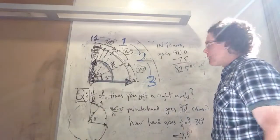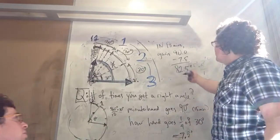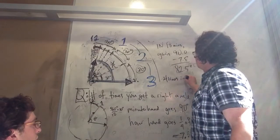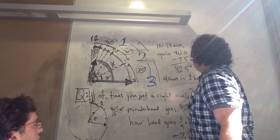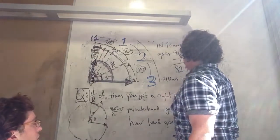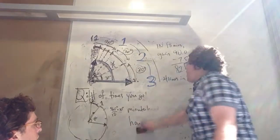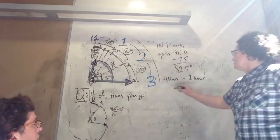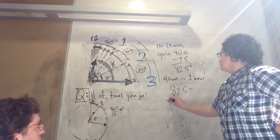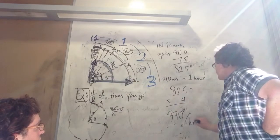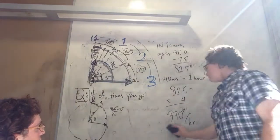So we could do it, so 82.5 degrees, we do this four times in one hour. 82.5 times four gives us 330 degrees per hour.